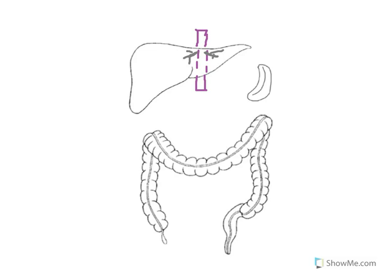Now in blue I want to draw in the hepatic portal vein. I'm going to bring it down and cut it off. This is a little bit more accentuated, drawing it larger just for clarity purposes — the hepatic portal vein in blue.